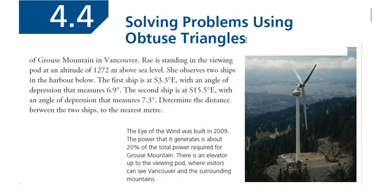I'm going to go over one problem here. Looking at this picture — that's a pretty big wind tower. This is the Eye of the Wind, and it was built in 2009. The power this wind turbine generates is about 20% of the total power required for Grouse Mountain. There's an elevator up to the viewing pod where visitors can see Vancouver and the surrounding mountains. That looks like the viewing pod right there — kind of cool, a little freaky with those big blades passing by. In this question, we visualize a person looking at two ships from this viewing pod.